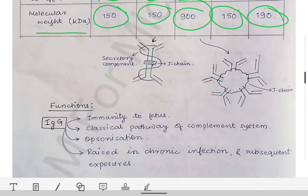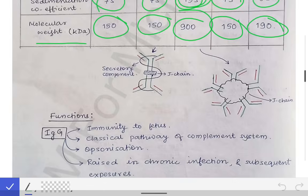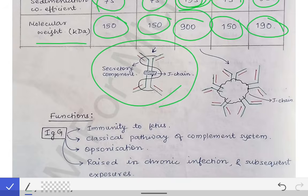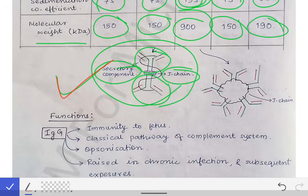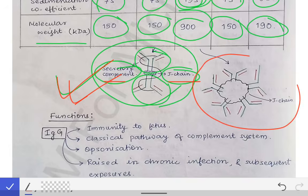Whenever they ask you to write a short note on the antibodies, you must draw the diagram of the antibody from the first part of the antibody lecture. If they ask about IgA antibody, make the dimeric form — two antibodies joined together by the J chain and the secretory component, and label them accordingly. If they ask about IgM antibody, make a pentameric diagram and show the J chain.